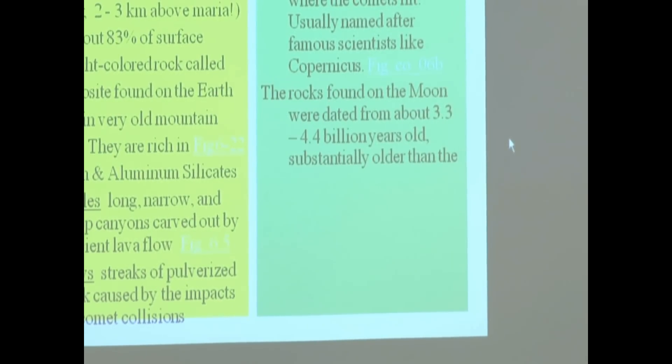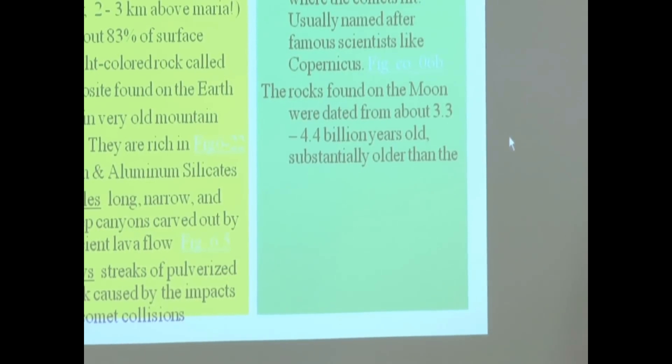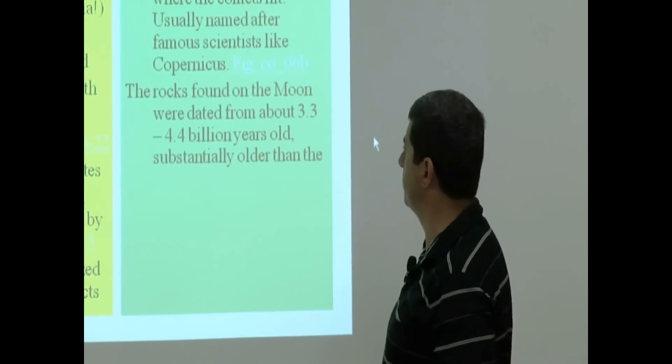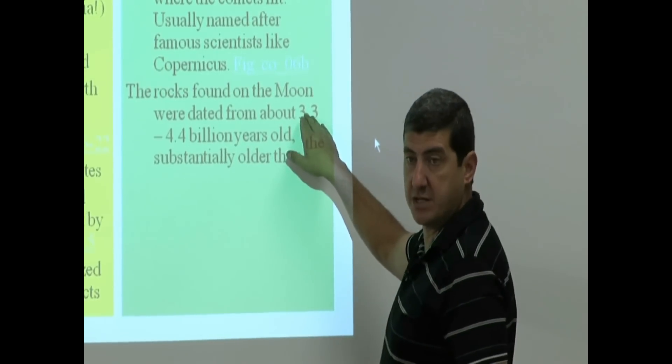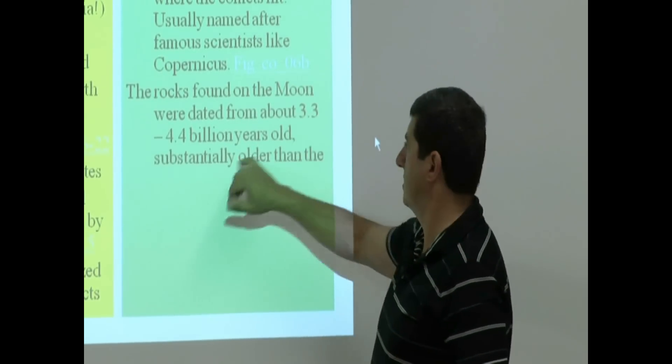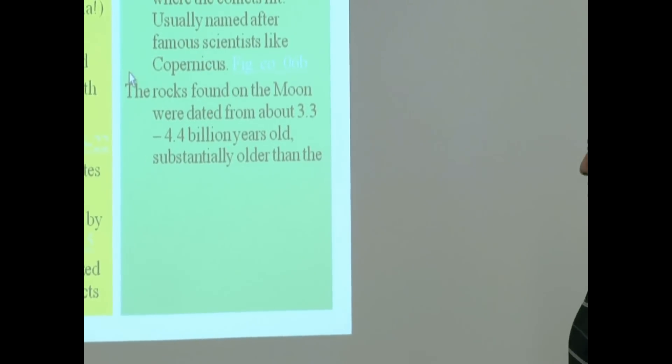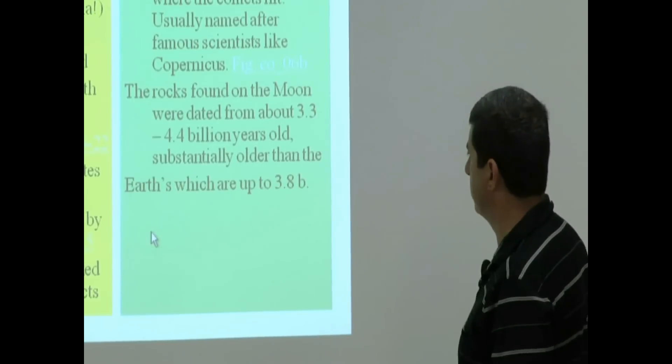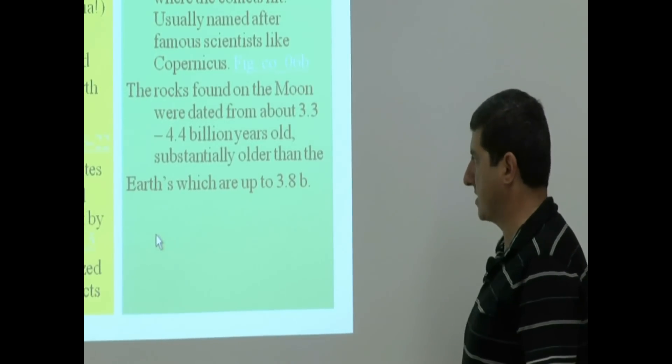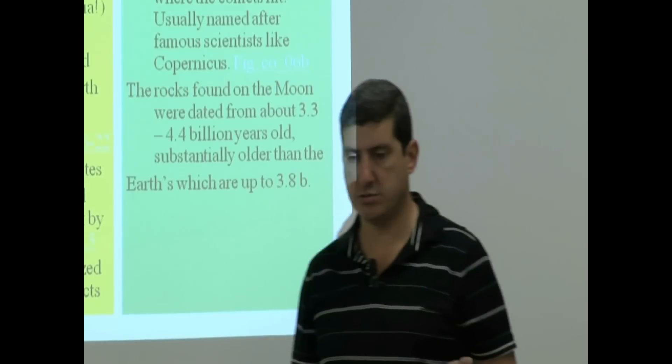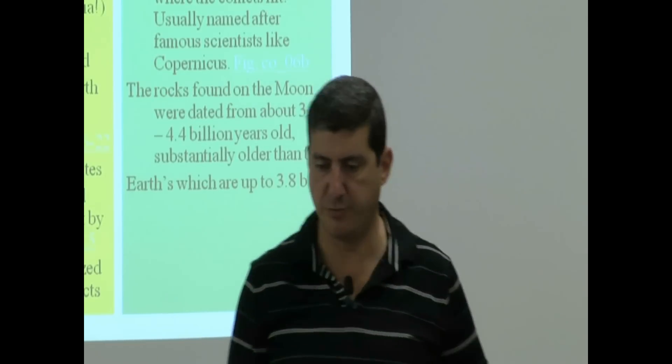The rocks found on the moon were dated from roughly 3.2, 3.3 to 4.4 billion years old. The younger ones are going to be the maria. The older ones are going to be the highland rocks. Substantially older than the Earth's rocks, which are dated up to 3.8 billion years old. Some of the oldest rocks on Earth are 3.8.